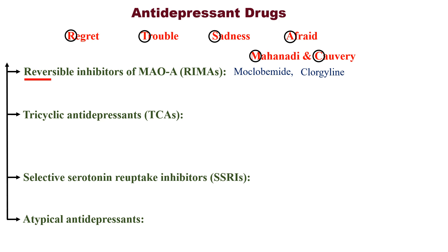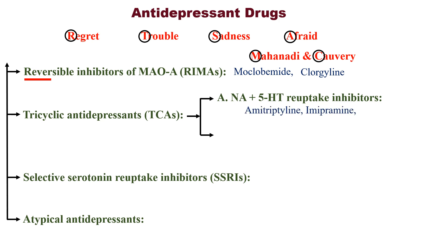The second category of antidepressant drugs is tricyclic antidepressants. It is subdivided into NA plus 5-HT reuptake inhibitors. NA means noradrenaline, and 5-HT is nothing but 5-hydroxytryptamine or serotonin. Examples of drugs are amitriptyline and imipramine. Noradrenaline corresponds to amitriptyline, and 5-hydroxytryptamine corresponds to imipramine.